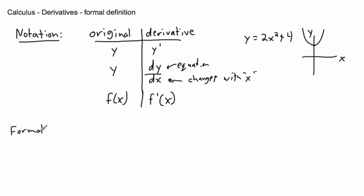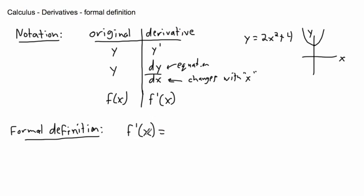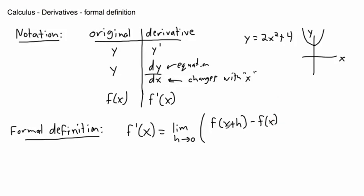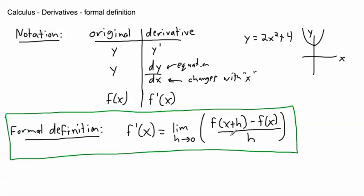So the formal definition: f prime of x — which means the equation for the derivative, in other words the slope of the tangent at any point — equals the limit as h approaches 0 of [f(x+h) minus f(x)] all over h. This is the formal definition. It may look gross, but I'm going to show you how we get this and try to make it make sense.